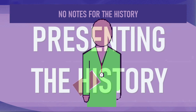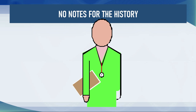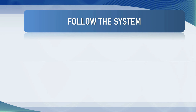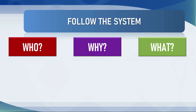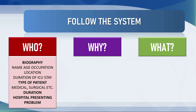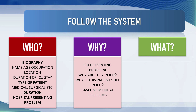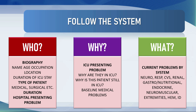If you're presenting the patient's history without the examination and all of the data, you should not need notes to do this. You should be able to rattle off the background story, the reasons for admission, all of the systems review, and the problem list off the top of your head. The way to do this is to follow the system I've just described. Who is the patient? Why are they in the ICU? And what are their problems in order of magnitude? Remember: that's the biography, the type of patient, the duration, the hospital presenting problem, the ICU presenting problem and why they're still in the ICU, the baseline medical problems, and of course the full problem list.